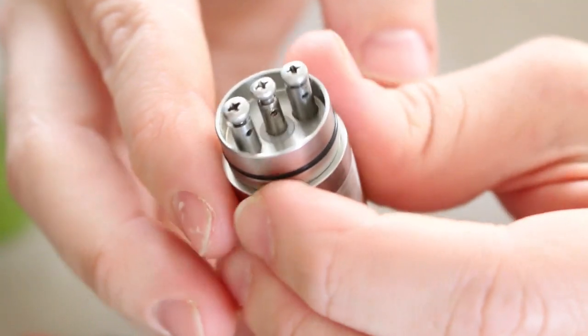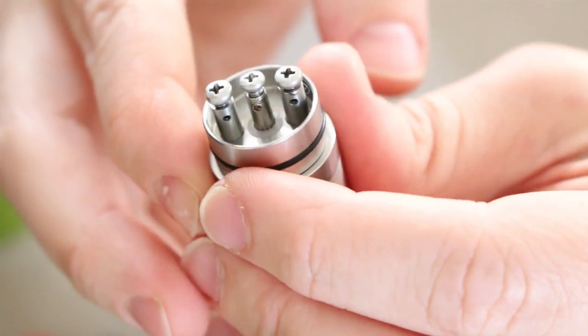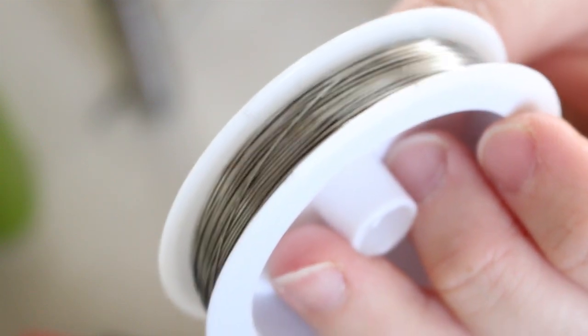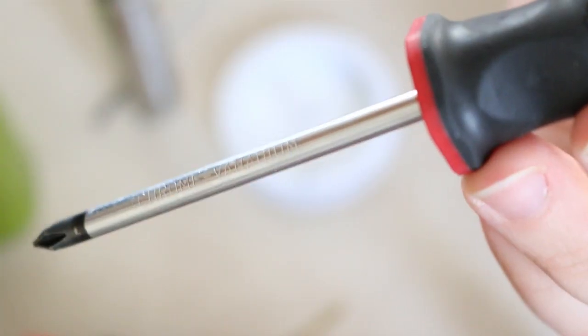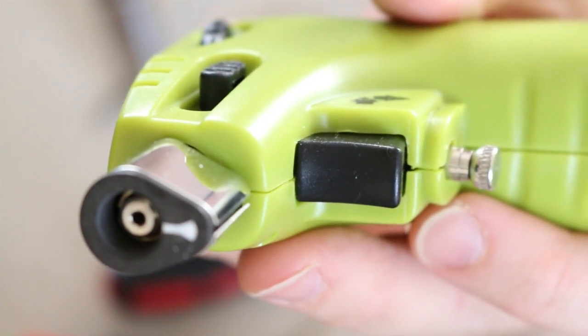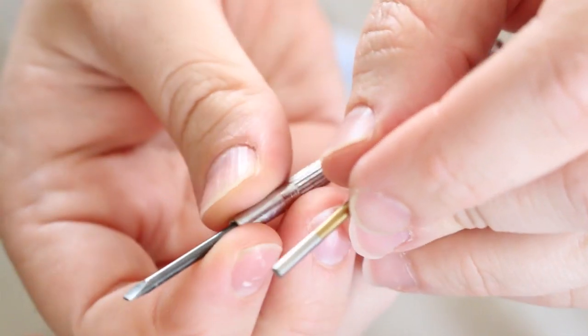Here's the RDA all stripped down and ready to build on. Things you're going to need: a 3/32nds drill bit, some 24 gauge canthal, a Phillips head screwdriver, and you're either going to need a lighter or a blowtorch. Now, as you can see, I have this screwdriver. It has a nice long handle on it for more leverage.